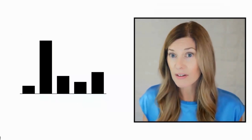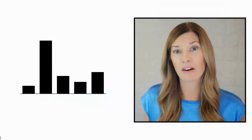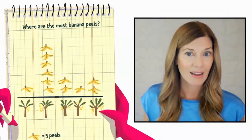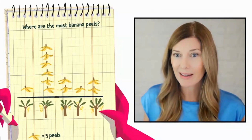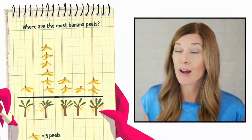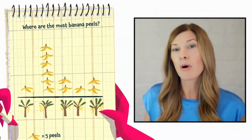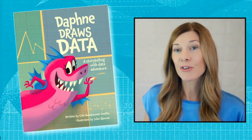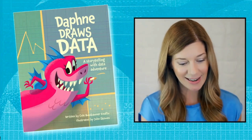Let's look at another scenario where we can use bars like this to better understand. Just like bars, these stacks of banana peels represent numbers too. Let's step back from the graph for a moment to learn about this situation. For that, I'll read the first few pages from my new book, Daphne Draws Data.